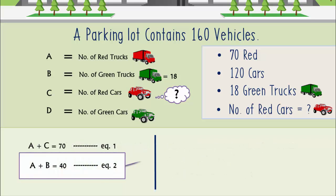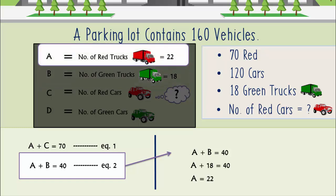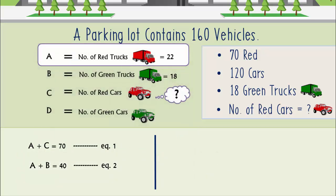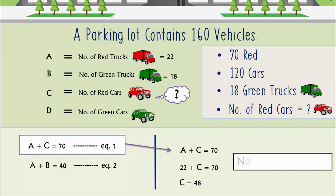Now in equation 2, we can put the value of B as 18, the number of green trucks. This gives us A as 22. Putting this value of A into equation 1, we get the value of C as 48. So there are 48 red cars in the parking lot.